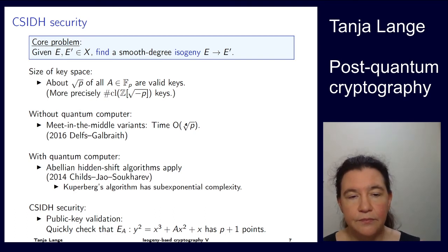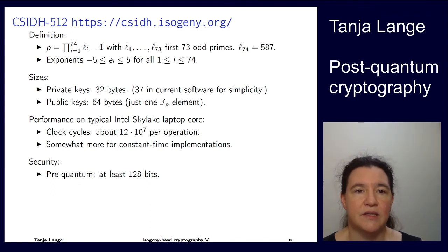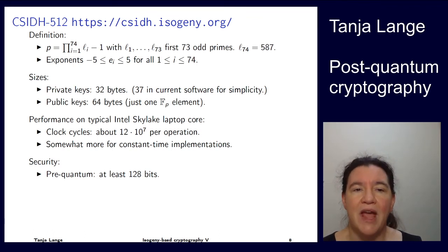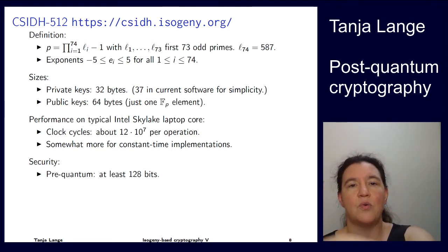If you are curious for your concrete instantiation, for the CSIDH-512 that's named after the size of the prime, which actually is 511 bits rather than 512, what we have there is that l₁ till l₇₃ are the first 73 odd primes, so that's 3, 5, 7, etc., and then searching from there to the first prime l₇₄ which makes this p be prime. These exponents are chosen between minus five and plus five.